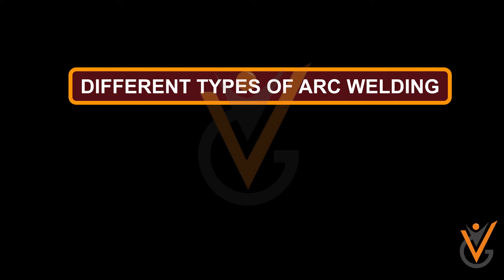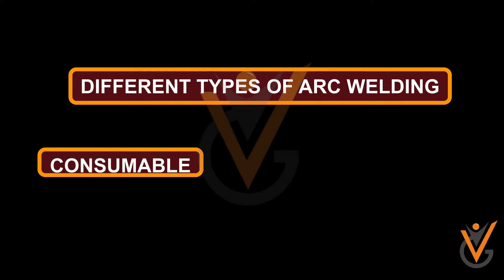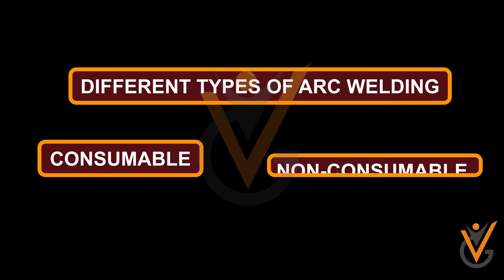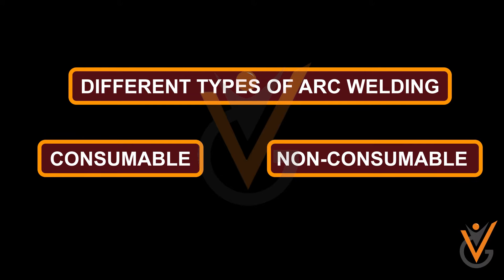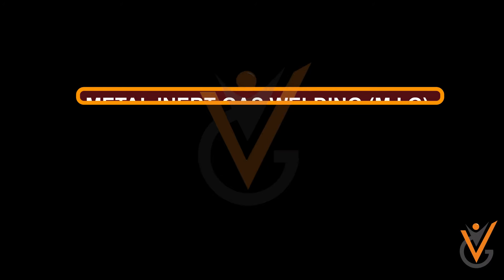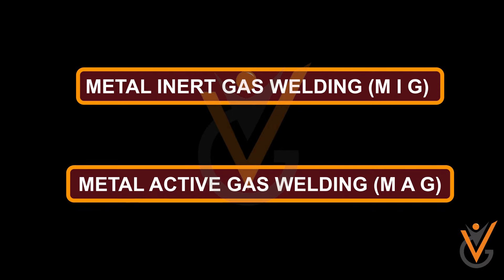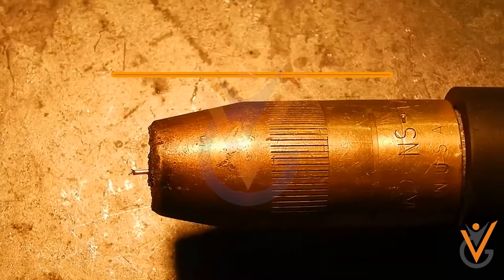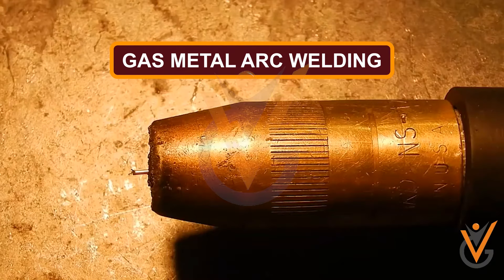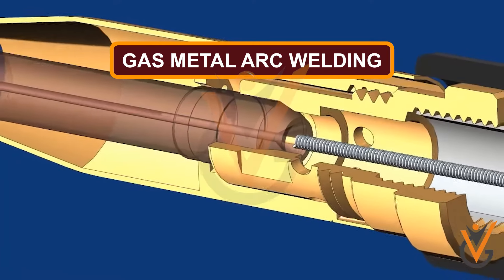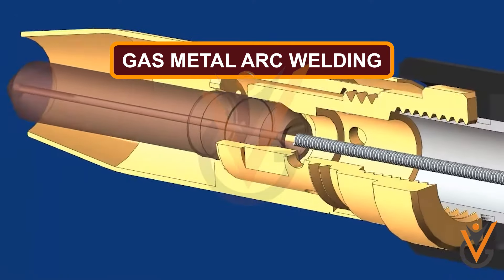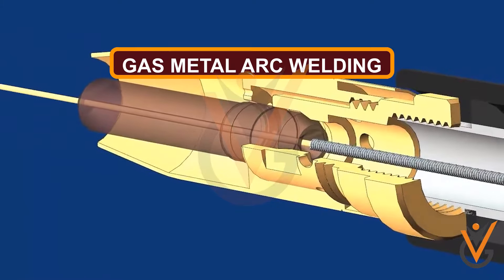Arc welding processes can be categorized into two different types: consumable and non-consumable electrode methods. Metal Inert Gas welding (MIG) and Metal Active Gas welding (MAG), also known as gas metal arc welding, uses a shielding gas to protect the base metals from contamination.